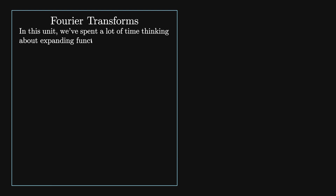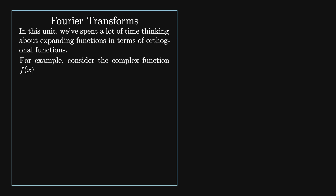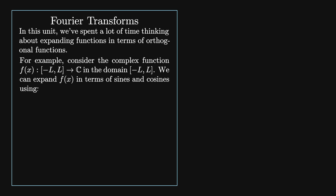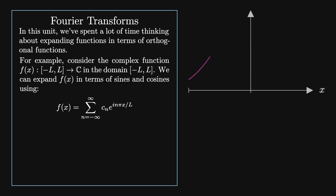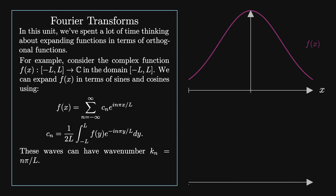In this unit, we've spent a lot of time thinking about expanding functions in terms of sets of orthogonal functions. For example, consider the complex function f mapping the interval minus l to l to the complex numbers. We can expand f in a Fourier series: f of x equals the sum from n equals minus infinity to infinity of c_n times e to the i n pi x over l, where c_n equals 1 over 2l times the integral from minus l to l of f times e to the minus i n pi y over l. Basically, this takes waves in the domain minus l to l and assigns a weight c_n to each of them. For these waves, we're allowed to have wave numbers k_n equals n pi over l.